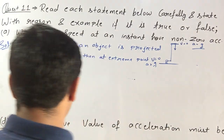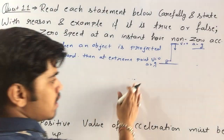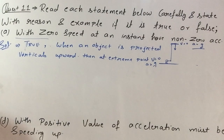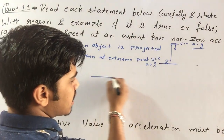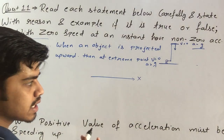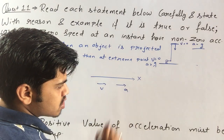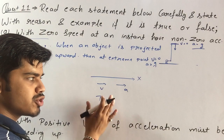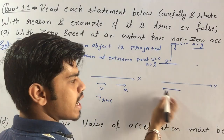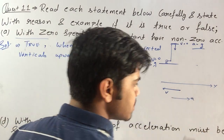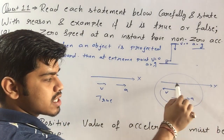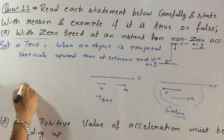Now the last question: does positive acceleration always mean speeding up? If velocity and acceleration are both in the positive x-axis direction, then yes, this is true. But in the case of retardation — where velocity is in one direction but the body is slowing down — acceleration is in the opposite direction. For example, during upward motion in free fall, in that case this statement is false.